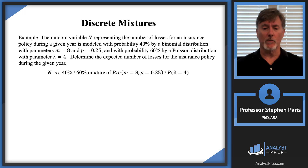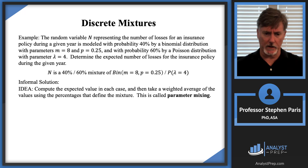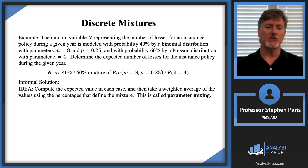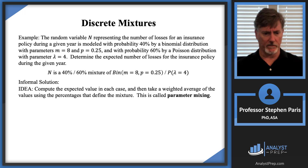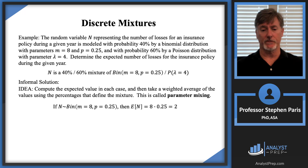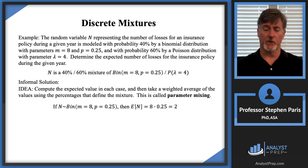The informal solution is to compute the expected value in each case and then take a weighted average of the values using the percentages defining the mixture — the 40% and 60%. This process is called parameter mixing. If I knew N was a binomial with m=8 and p=0.25, the expected value is the product of those parameters, which is 2.